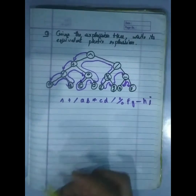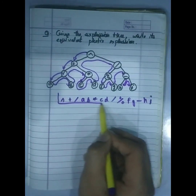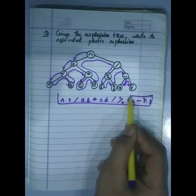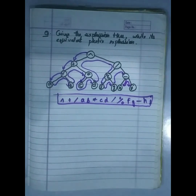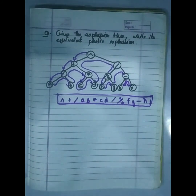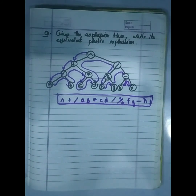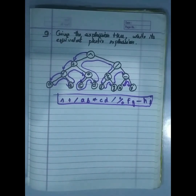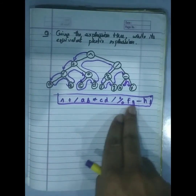So basically what I showed you is how to make an expression tree from a prefix expression, and then how to recover the prefix expression from an expression tree by doing a pre-order traversal. You can write this out on paper using pre-order, and the prefix expression will be obtained.